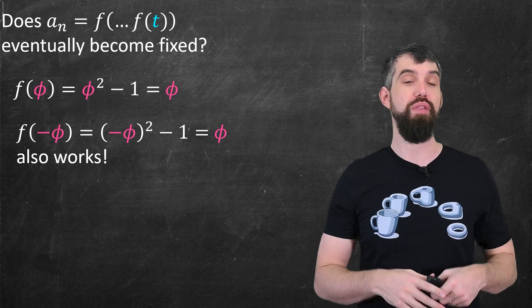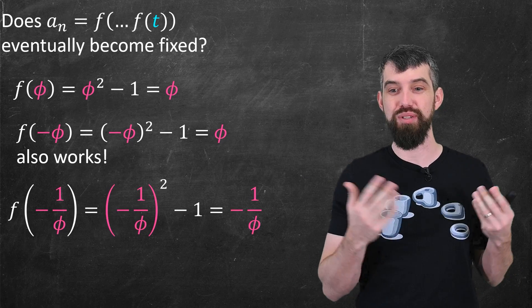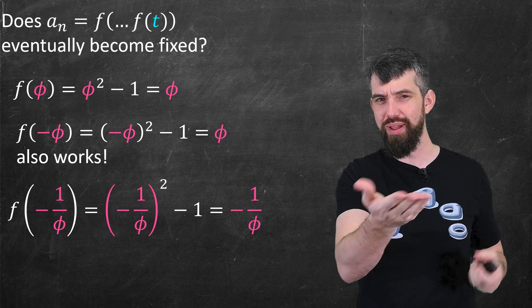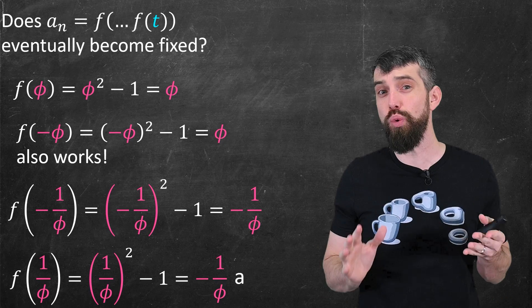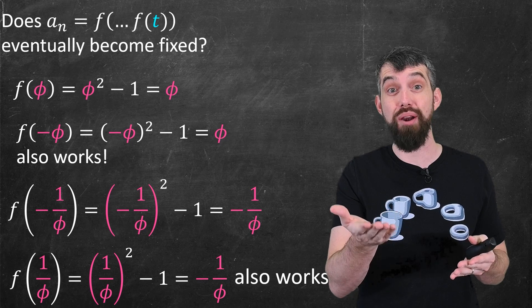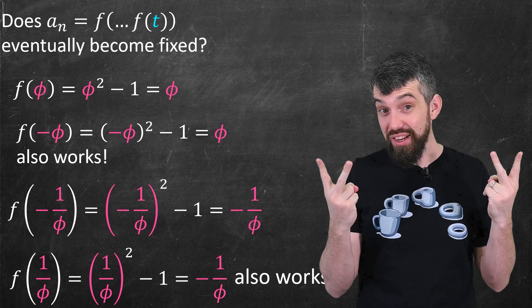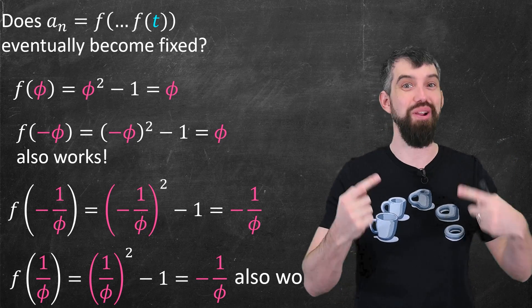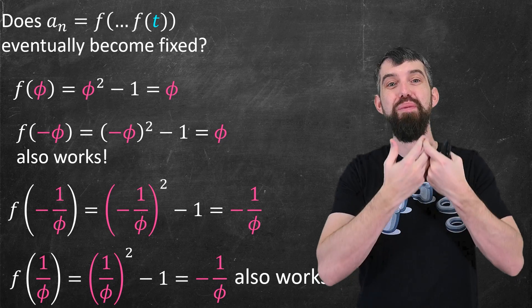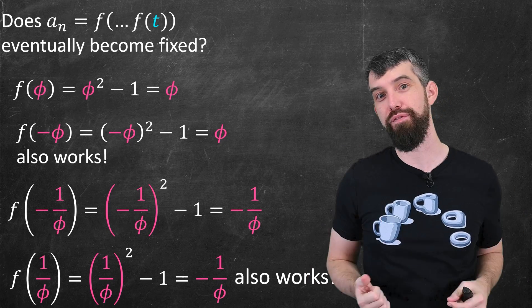Similarly for the other one, we saw that negative 1 over phi was a fixed point, but plug in the same thing without the negative sign. It also works because of the square and the definition of f. So we have these two fixed points, and then the negatives of those two fixed points that are going to be fixed after one application of f. So already we've got four points that are going to converge.